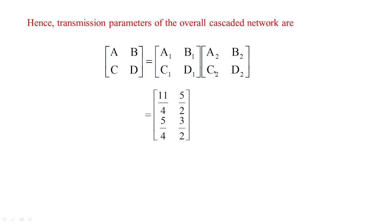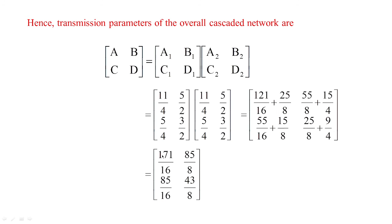Since the same circuit is connected as input to another network, I replace A2, B2, C2, D2 with the same values as A1, B1, C1, D1. Performing the matrix multiplication gives 171/16, 85/8, 85/16, and 43/8 — which are approximately 10.68, 10.62, 5.31, and 5.37.